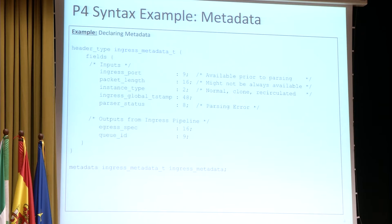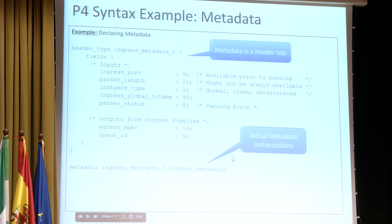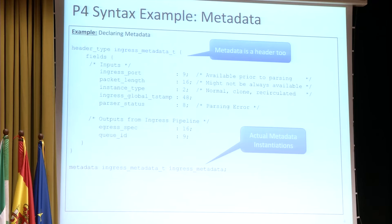Here's an example syntax for a header declaration—in this case a metadata declaration, which is also a header type. It has a bunch of fields and width of the fields. The top is the actual declaration and the bottom is the instantiation. This gives a high-level overview of what P4 is and how the program looks. Brendan is going to go through an actual P4 program in a little bit.